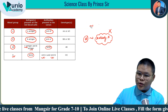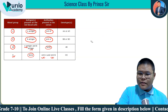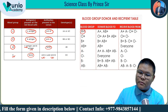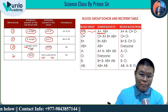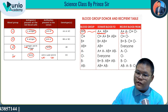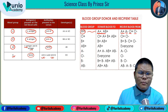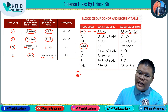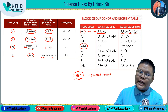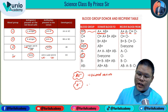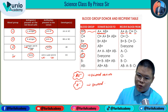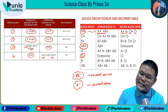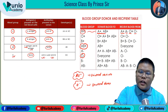Now, AB positive is called the universal receiver (universal acceptor) — it can receive blood from all blood groups. O negative is called the universal donor — a person with O negative blood can donate blood to any person regardless of their blood group.